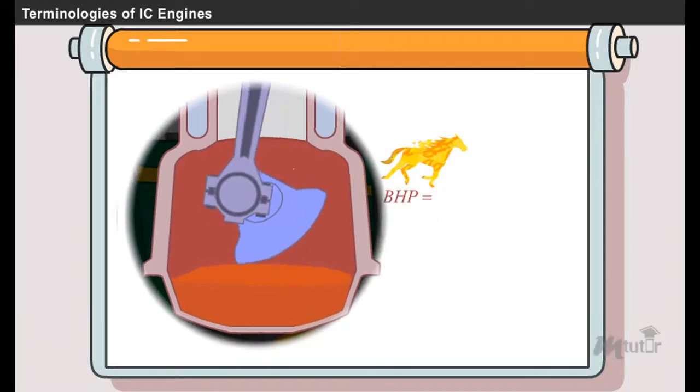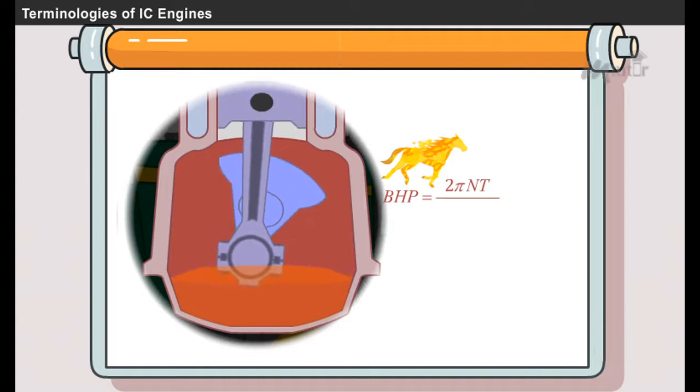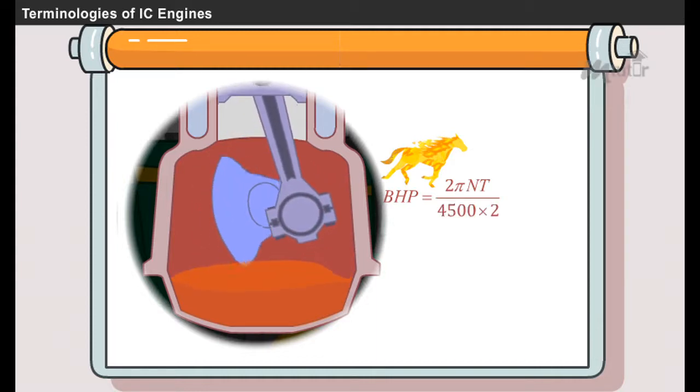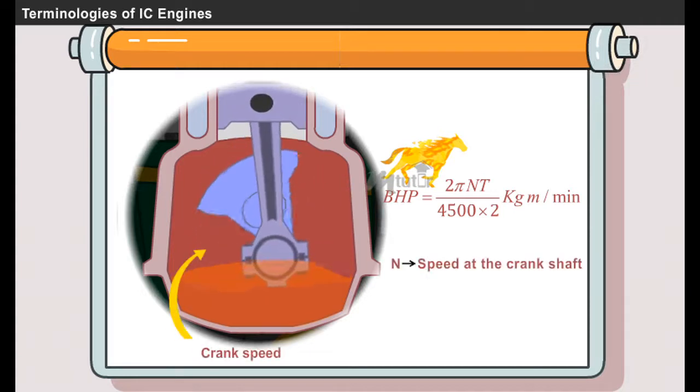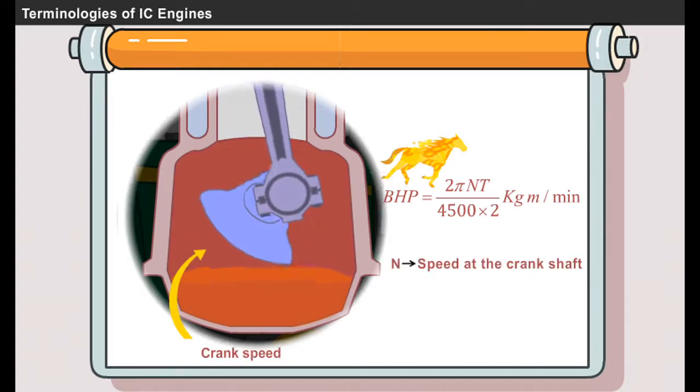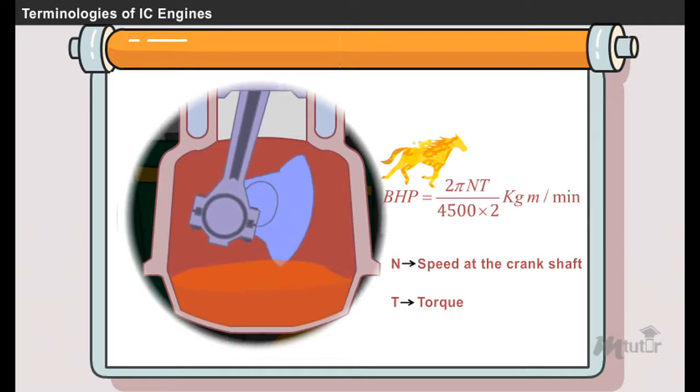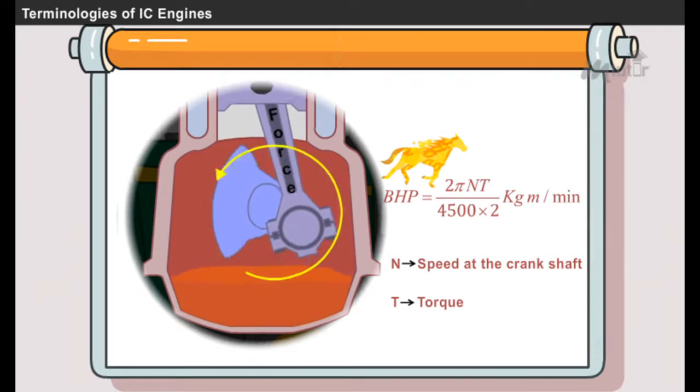BHP = (2πNT) / (4500 × 2) in terms of kilogram meter per minute, where N is the speed at the crankshaft and T is the torque which is the force that causes the rotational motion.